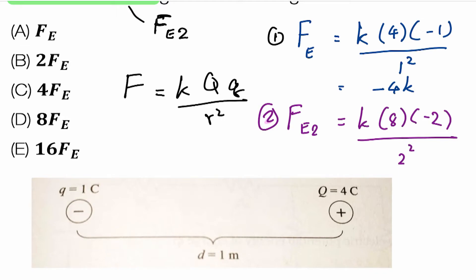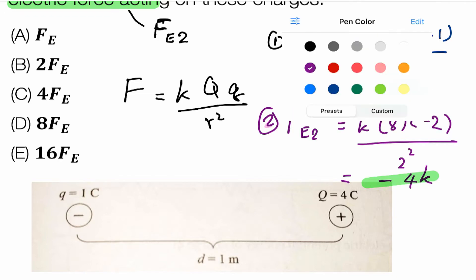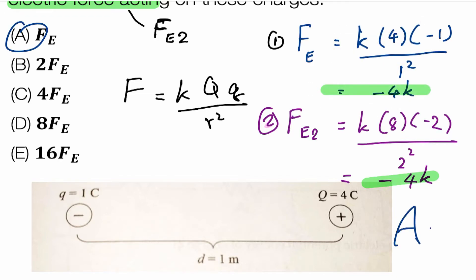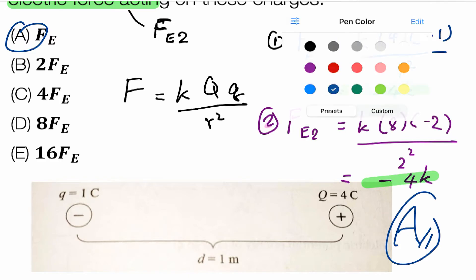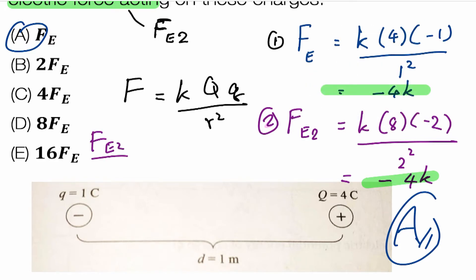Now, Fe prime — the new electric force on these charges — is equal to 4K. We can see that Fe equals 4K and Fe prime also equals 4K. So we can see that Fe prime equals Fe — it is equal to Fe.